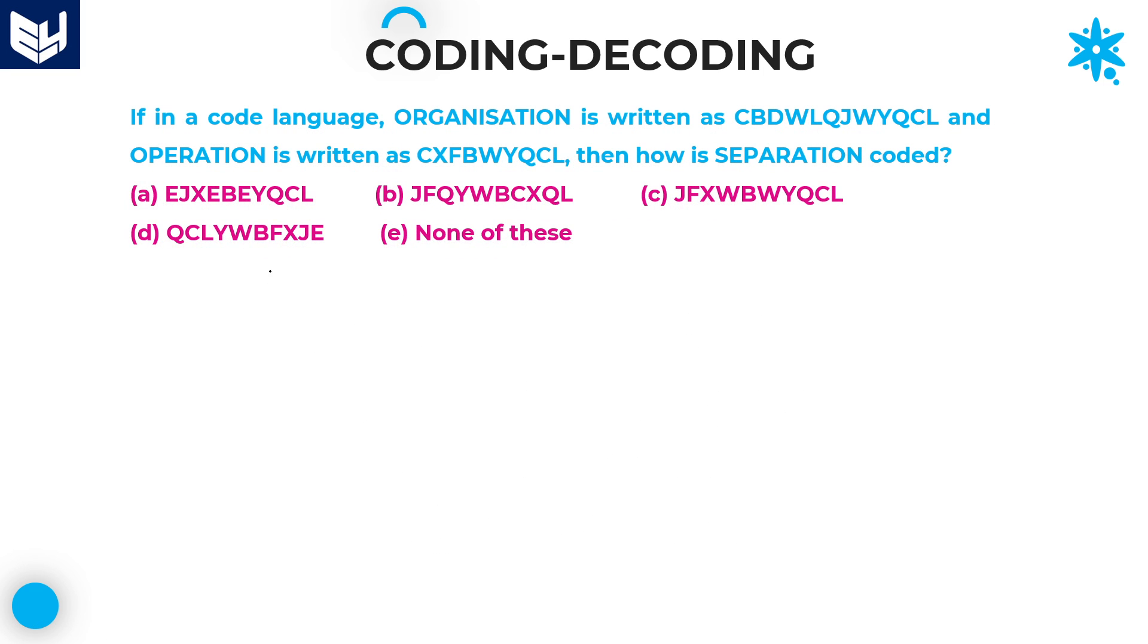Let's move on to the next question. If in a code language, ORGANISATION is written as this particular code and OPERATION is written as this particular sentence, and in a similar fashion, we need to write the code for SEPARATION. Guys, as it is a very big word, no need of writing this entire word. If you observe carefully, A-T-I-O-N, last five letters are same. Here, once checked out last five letters code, which is nothing but W-Y-Q-C-L.